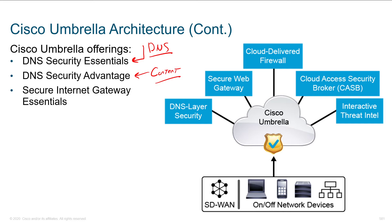The Secure Internet Gateway Essentials, or SIG Essentials, uses a Secure Web Gateway to proxy all web traffic — including URL inspection, AMP inspection, SSL decryption, web filtering, category filtering, Threat Grid, and cloud sandbox — all at the cloud level. It adds a cloud-delivered firewall with Layer 3 and Layer 4 policies, blocking IP addresses and port numbers. It also includes a Cloud Access Security Broker to discover and block shadow systems based on URLs and apply granular policies for specific cloud applications. Think of these three tiers as bronze, silver, and gold.